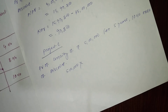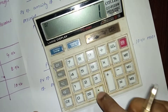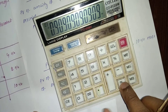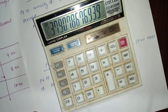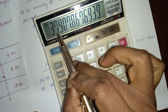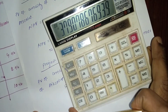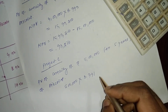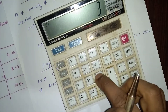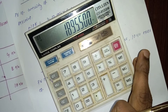Rate of discount is ten percent, so calculate: one divided by one point ten, equal. Calculate up to five years: one, two, three, four, five. Then press GT, which gives 3.79078, approximately three point seven nine one.